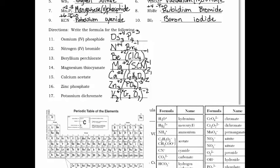Let me quickly show you one where there is a common factor so you know what to do. We'll do carbon(IV) oxide. Carbon is a plus four — we got that from the name. Oxygen is negative two. They don't cancel each other out, but they do have a common factor. So you could go ahead and swap and drop, but you've got to pull that common factor out — in this case it's a two. So we get CO₂ — carbon dioxide. That's what you do if there's a common factor.